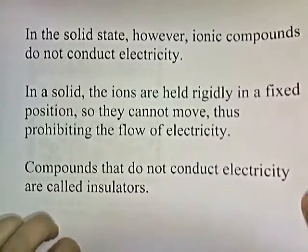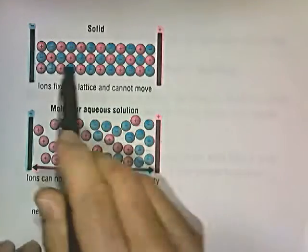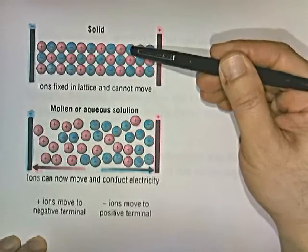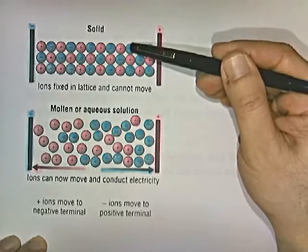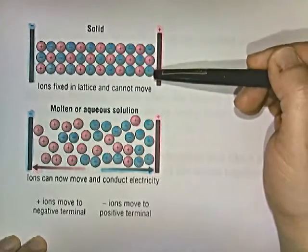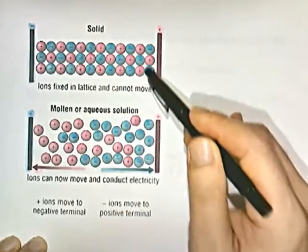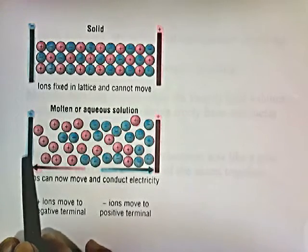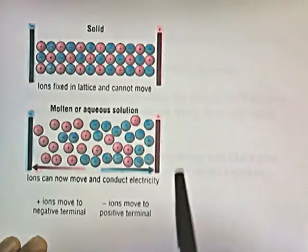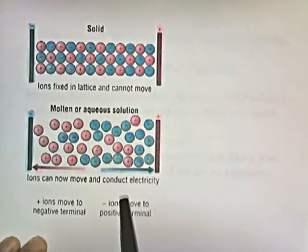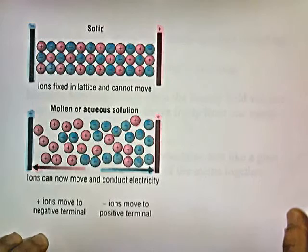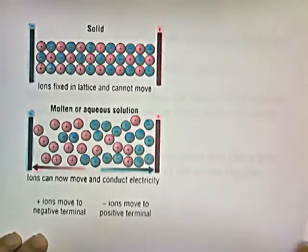In a solid, the alternating positive and negative charges are not going to move — they're in a fixed position, attracted to surrounding oppositely charged ions. But if you heat it enough to break the bonds and let the ions flow, you can have an electric current. By applying a battery, you attract negative charges toward the positive terminal and positive ions toward the negative terminal. This flow of charge is electricity. So the basic conclusion is that ionic compounds conduct electricity only in the molten state or in aqueous solution.